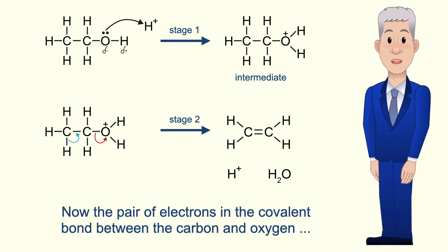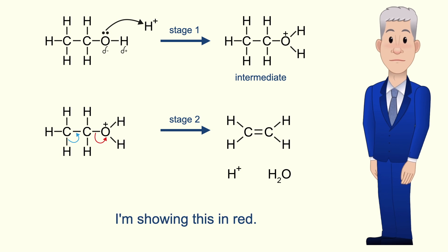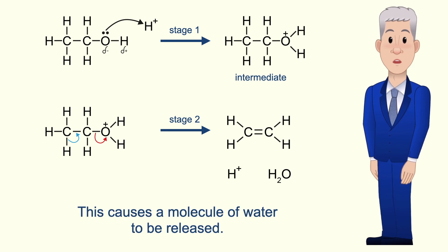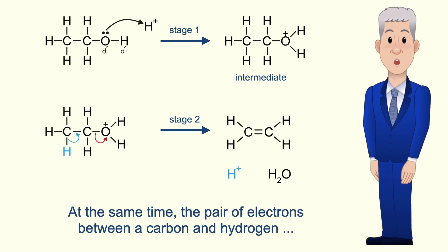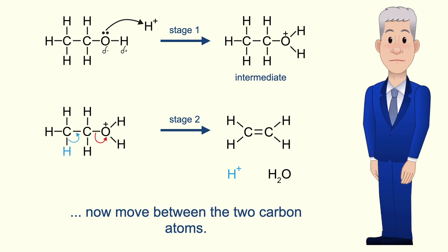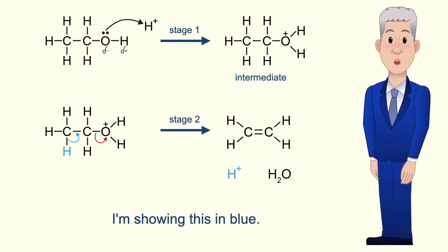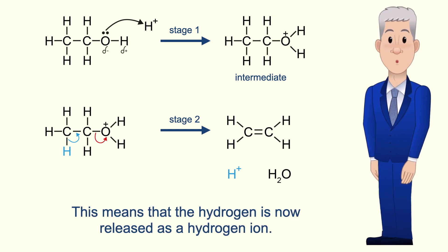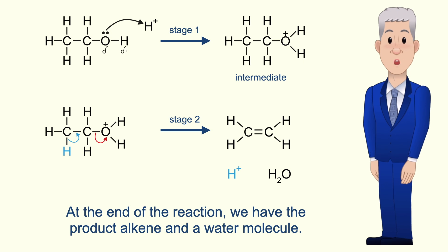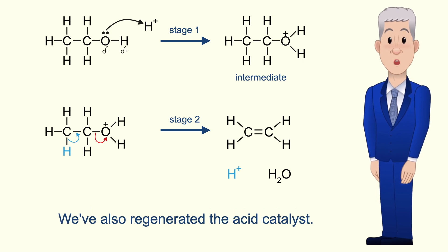The pair of electrons in the covalent bond between the carbon and oxygen move onto the oxygen atom — I'm showing this in red. This causes a molecule of water to be released. At the same time the pair of electrons between a carbon and hydrogen now move between the two carbon atoms — I'm showing this in blue. This means that the hydrogen is released as a hydrogen ion. So at the end of the reaction we have the product alkene and a water molecule, and we've also regenerated the acid catalyst.